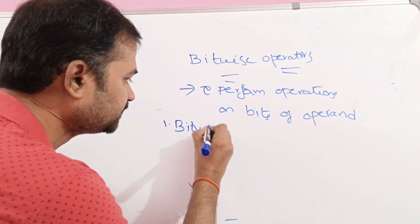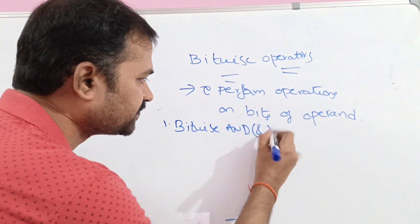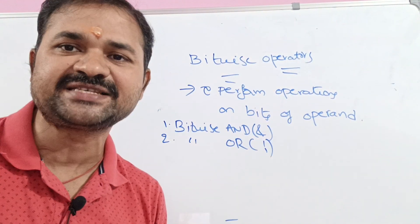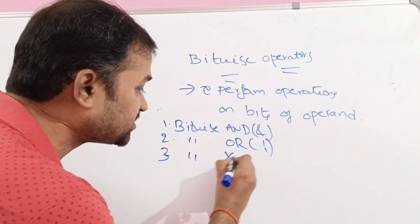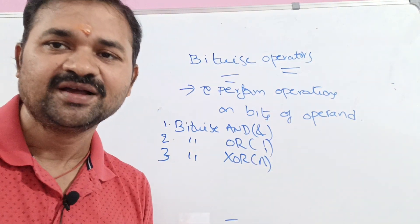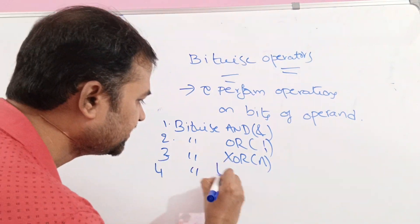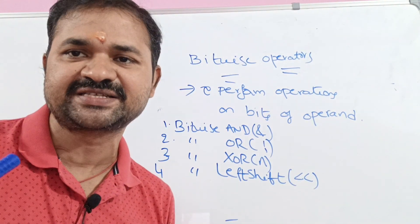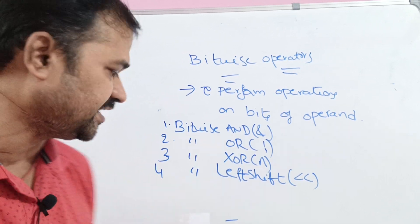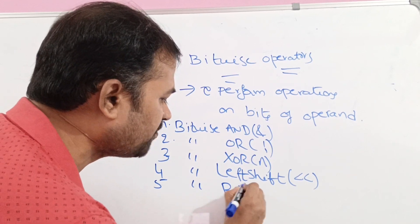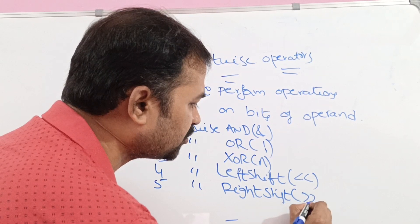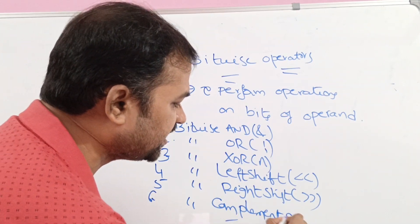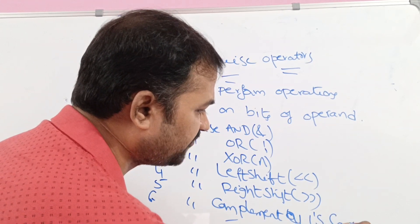The first one is bitwise AND, denoted by a single ampersand symbol. The second one is bitwise OR, denoted by a single pipeline symbol. The third one is bitwise exclusive OR, represented by the caret (cap) symbol. Next is bitwise left shift, denoted by two less-than symbols. Then bitwise right shift, denoted by two greater-than symbols. Last is bitwise complement, also called the one's complement operator.